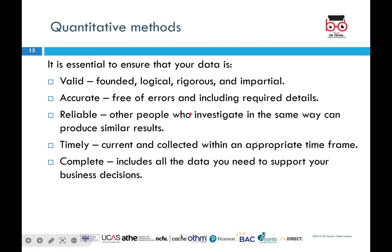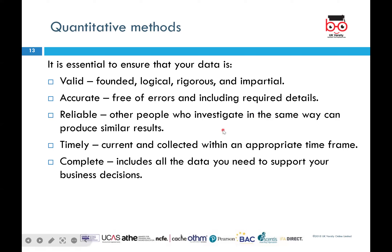The data should be reliable, meaning other people who want to investigate the same area can use your work. For example, if you research autism in young children, another researcher wanting to study autism in a different population can use your methods to get similar results. Your results should serve as a guide for research on different populations.